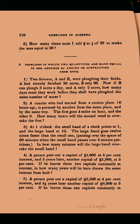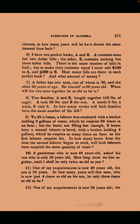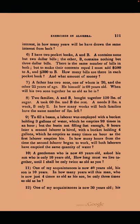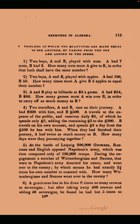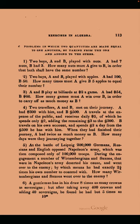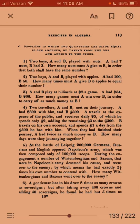I think I downloaded this book because it's the one with the 'gentleman fond of cider' question. That's a work problem. I like how they spell 'basin.' Historical question: 'At the Battle of Leipzig, 200,000 Germans, Russians, and English opposed Napoleon's army, which was then composed only of 100,000 troops. During the engagement, a number of Württembergians and Saxons that were in Napoleon's army deserted his cause and went over to the enemy, by which means he had exactly two and three-quarters times his own number to contend with. How many Württembergians and Saxons went over to the enemy?' Okay, I'm bookmarking that one too, because I like that one.